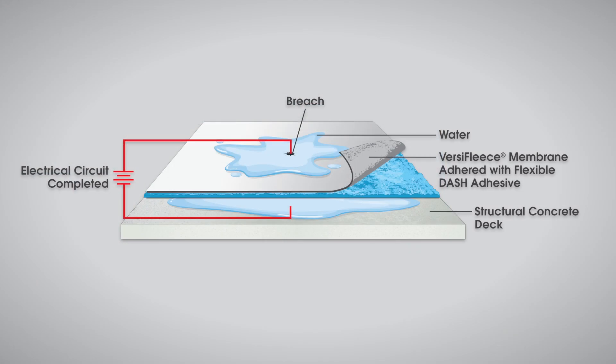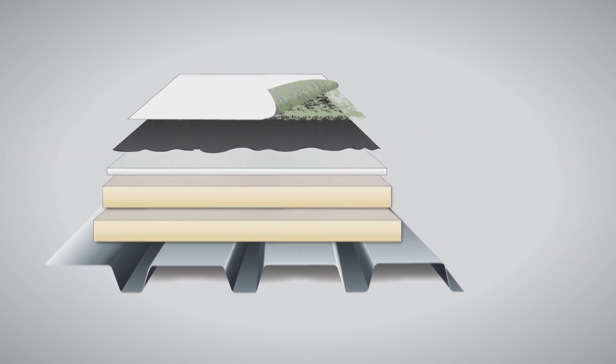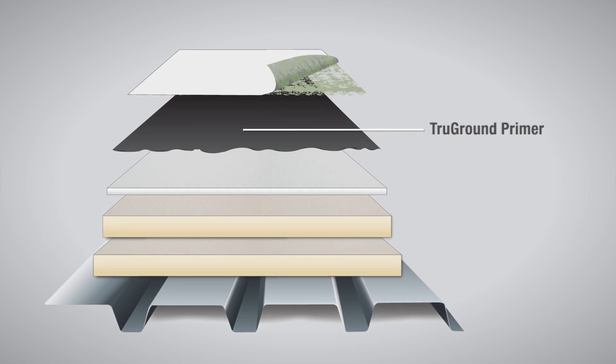Quality control ELD testing requires a conductive substrate directly below the membrane to allow completion of an electrical circuit. For conventional roofing assemblies, a conductive substrate must be provided within the roofing assembly during roof installation.